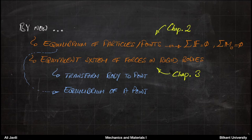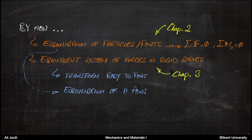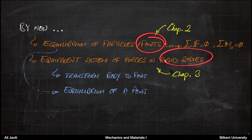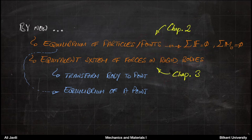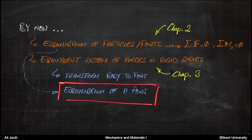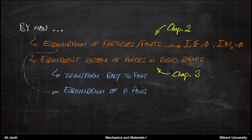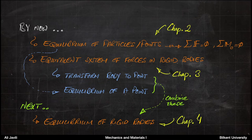After that we learned how to deal with equivalent systems of forces in rigid bodies. Here we are not talking about points with zero dimension — we talk about rigid bodies, and for those bodies we try to transform them to a point. So in the first lecture we learned equilibrium of a point; in the second lecture we learned how to transform a body to a point. Now we want to combine these and write the equilibrium of rigid bodies, which is Chapter 4 of the Beer-Johnson book.